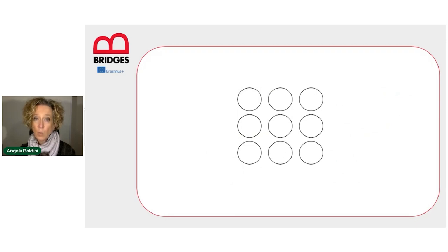A visual-spatial working memory task would be, for example, to remember the four positions in reverse order. So in this case, it would be 1, 2, 3, and 4.